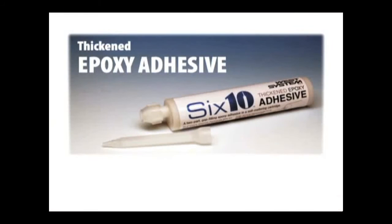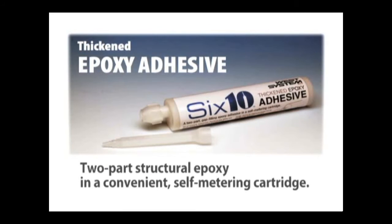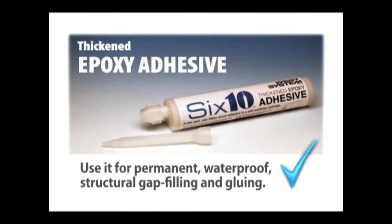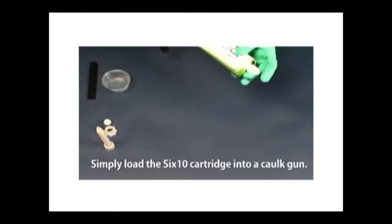West System brand 610 Thickened Epoxy Adhesive is a two-part structural epoxy in a convenient self-metering cartridge. Use it for permanent waterproof structural gap filling and gluing. Simply load the 610 cartridge into a caulk gun.